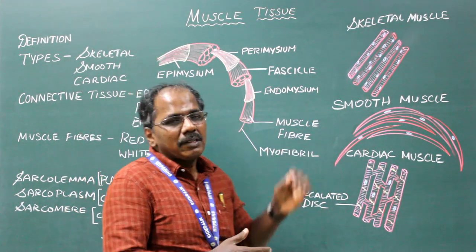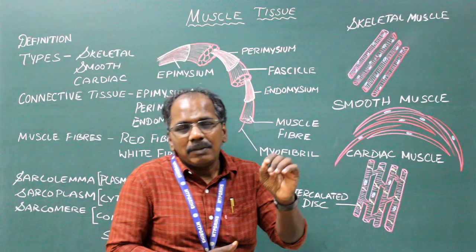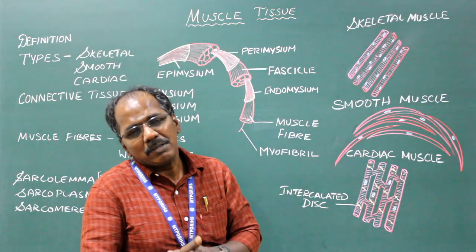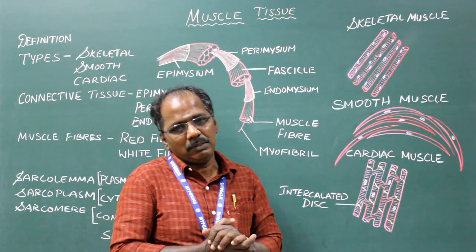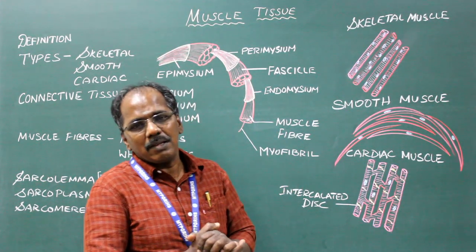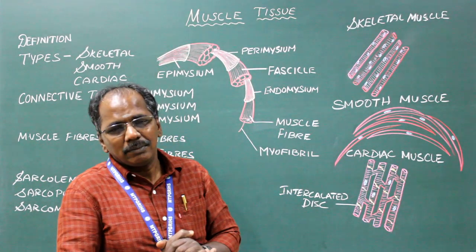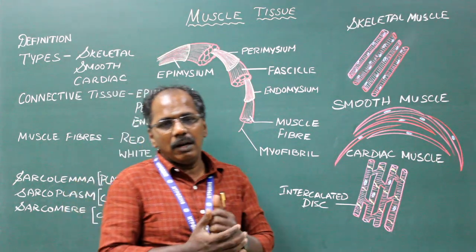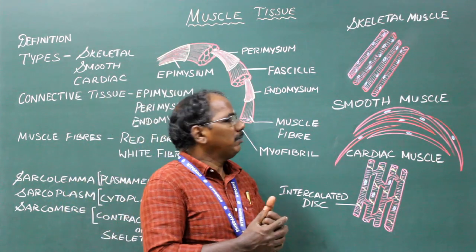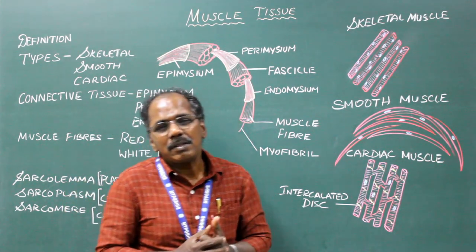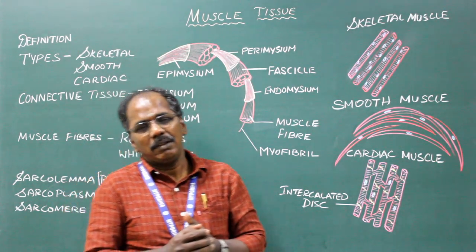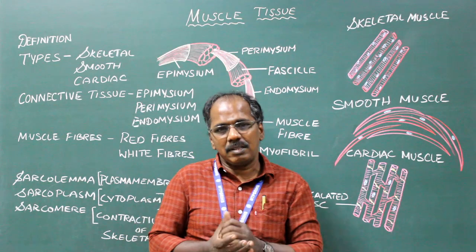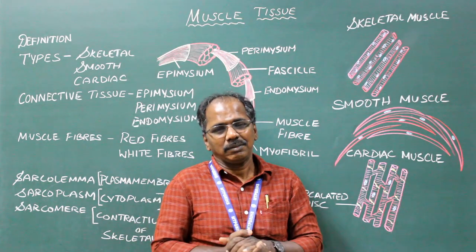It is innervated by somatic nerves, that is, spinal nerves. Examples include the deltoid, gluteus maximus, and muscles of facial expression.